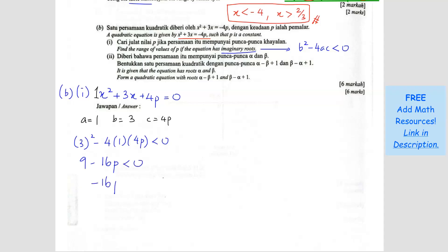So negative 16p is less than negative 9. To remove the negative, divide both sides by negative 16 — the sign flips. So p is more than 9/16. That is your answer: p more than 9/16.